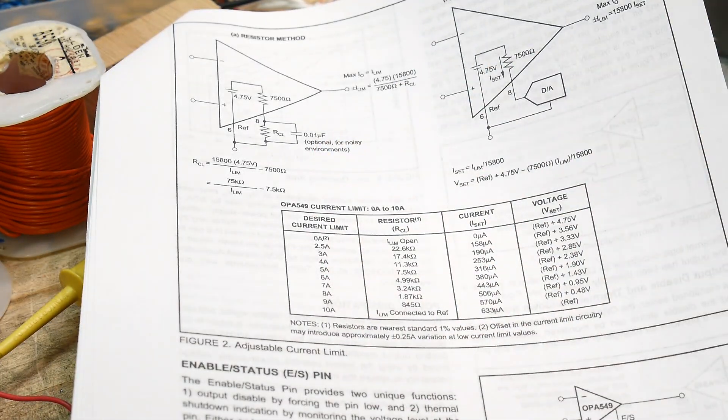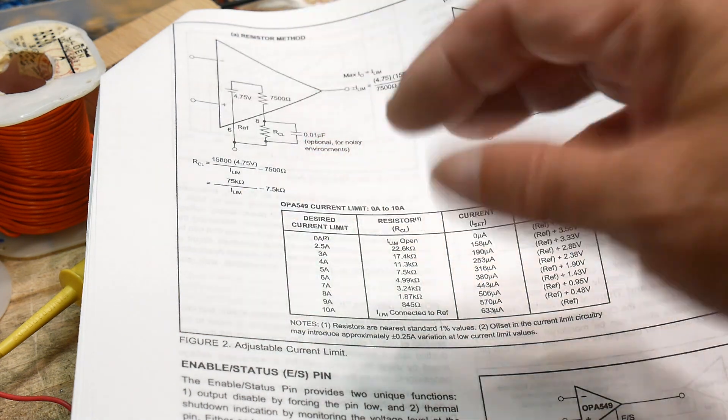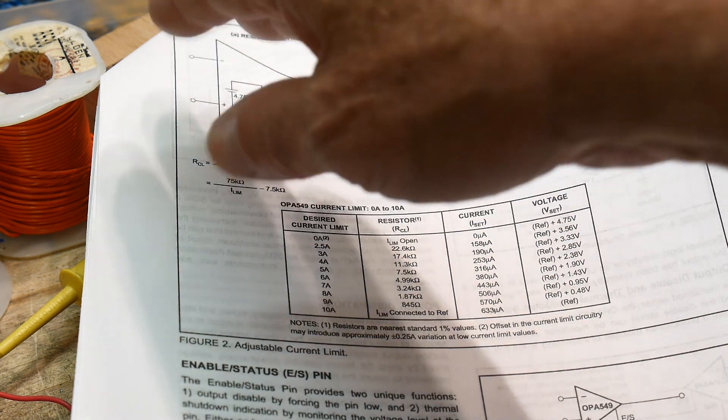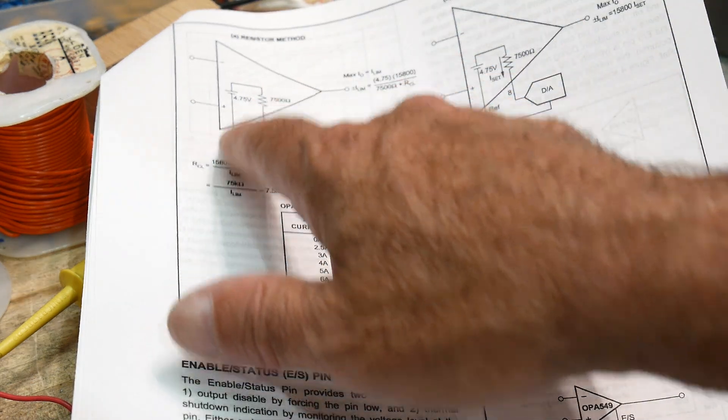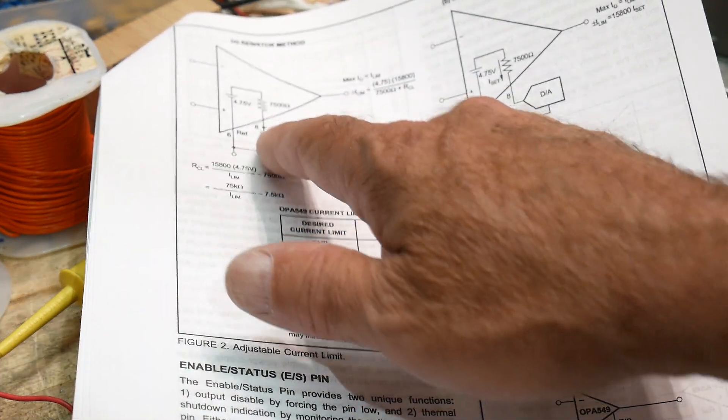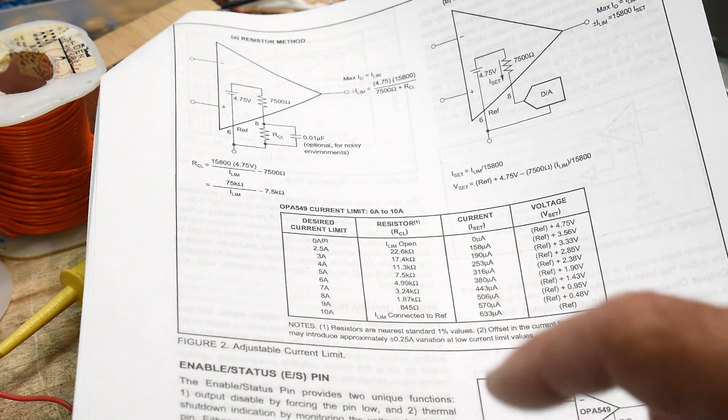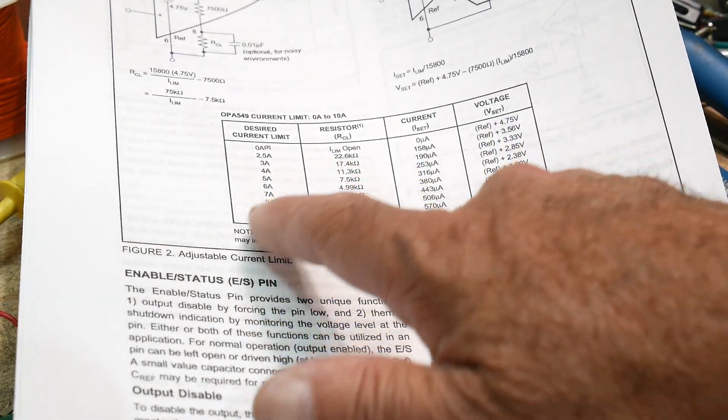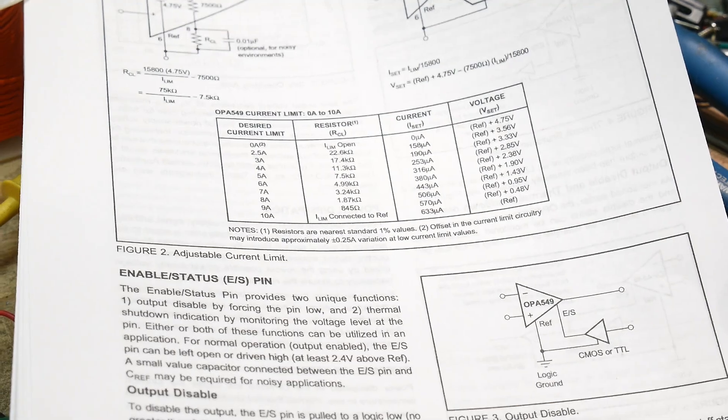Okay, so this thing, a lot of times when you need to have current limiting, you need to have a resistor outside of the device. Well, this has internal monitoring of what current's coming out. And it can sense it inside the part. And there's a programming resistor on pin eight, pin eight to reference. In my case, pin eight to ground, you set the amount of maximum current where you want it to shut down. And there's a table here. So like three amps is 17k, eight amps is 1.8k. So you change this and you'll get different current limits.